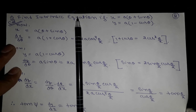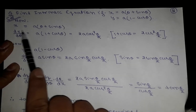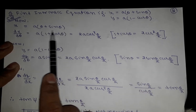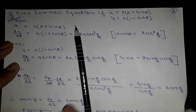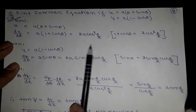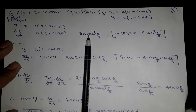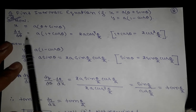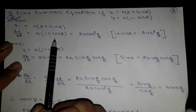Here we are going to see how to find the intrinsic equation. We have x = a(θ + sinθ). We will find dx/dθ. Whether we need to find an intrinsic, pedal, or any other equation, we differentiate for arc length, rectification, or volume. Since x and θ are variables, we need to find dx/dθ.